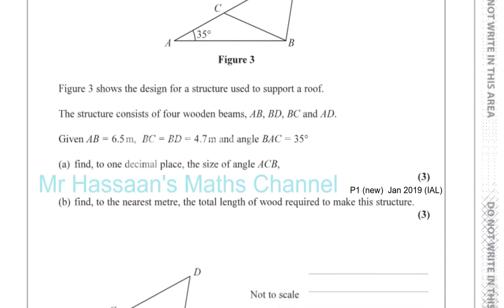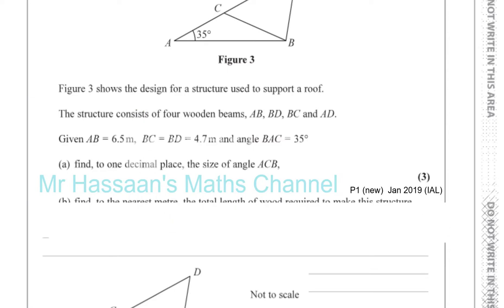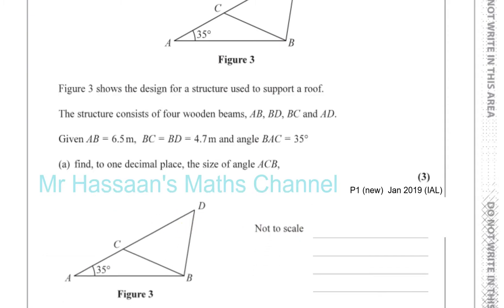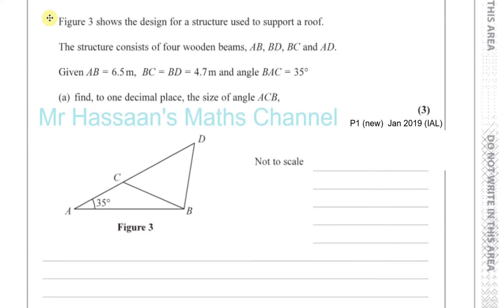To make life a bit easier, I've prepared a diagram. AB is 6.5 meters. BC and BD are both 4.7, so I'll mark them with the same marking — we can plot this isosceles triangle, we might need it. BAC is 35 degrees, already marked. We're going to find angle ACB; I'll call it X for now.